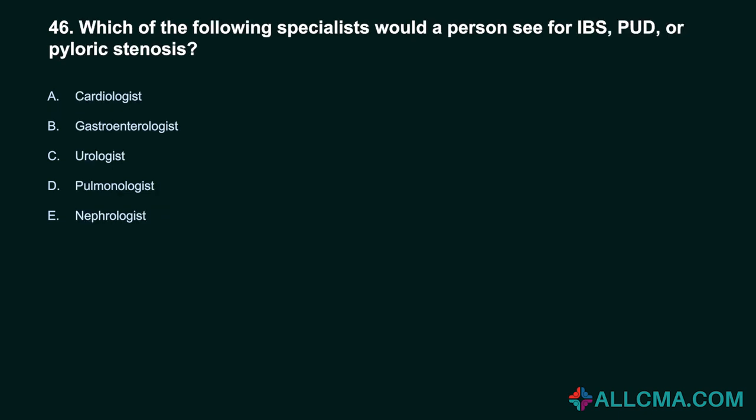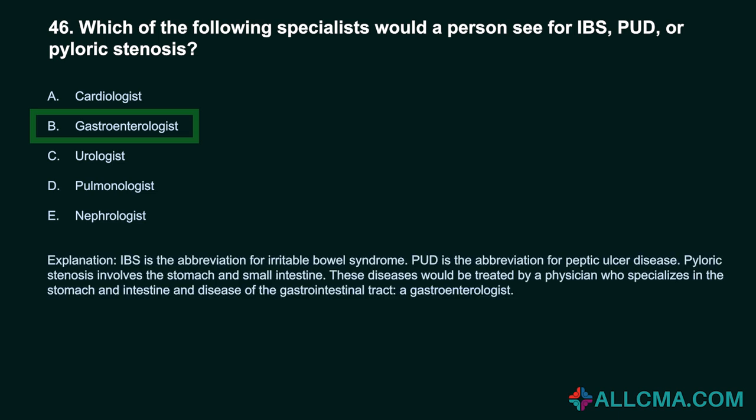Question 46: Which specialist would a person see for IBS, PUD, or pyloric stenosis? a) cardiologist, b) gastroenterologist, c) urologist, d) pulmonologist, e) nephrologist. Correct answer: B, gastroenterologist. IBS is irritable bowel syndrome, PUD is peptic ulcer disease, and pyloric stenosis involves the stomach and small intestine. These diseases are treated by a physician specializing in the stomach and intestines, a gastroenterologist.